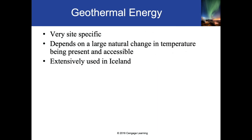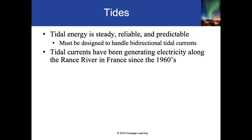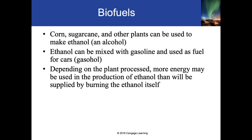Geothermal energy comes from heat in the ground, but it's very site-specific — it depends on large natural temperature changes being present and accessible. It's used in Iceland and some areas of Hawaii. Tidal energy is reliable and predictable, must handle bidirectional tidal currents, and has been generating electricity in the Rance River in France since the 1960s. Biofuels like corn, sugarcane, and algae can be converted to ethanol for use as fuel.